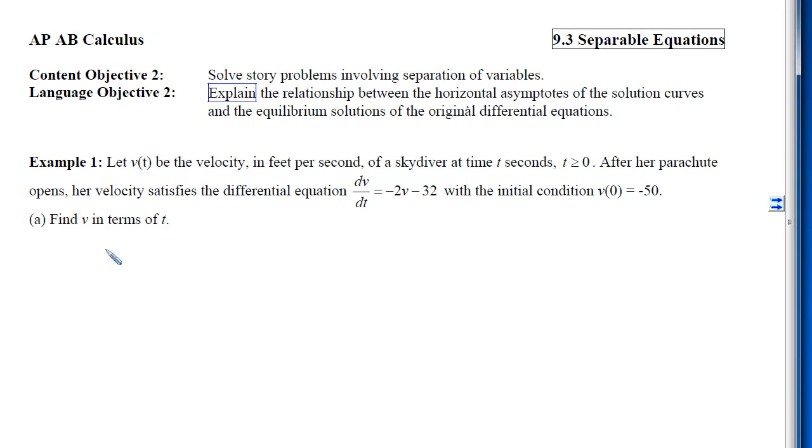Our first part is to find that velocity in terms of t, and we're going to use separation of variables. The first thing I'm going to do is move the dt to the right-hand side. Notice that the v is now multiplied by dt, so I cannot add it to the other side. Instead, I have to divide. My goal is to create something that is as easy as possible to integrate. So I'm going to divide by v+16 and leave the negative 2 behind.